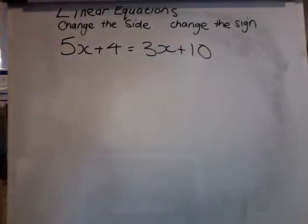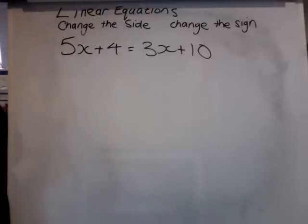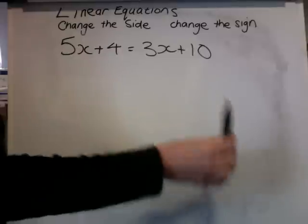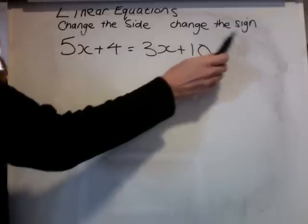OK, let's have a look at a slightly more complicated one. I've got X's on both sides, but I'm still going to do the same thing. I'm going to have all my X's on one side, my numbers on the other, and when I change the side, I'll change the sign.